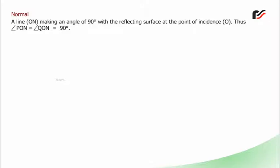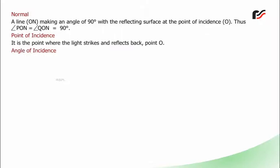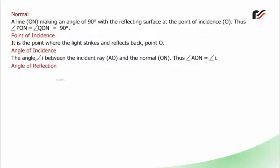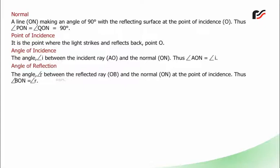Point of incidence: It is the point where the light strikes and reflects back, point O. Angle of incidence: The angle, angle I, between the incident ray AO and the normal ON. Angle of reflection: The angle, angle R, between the reflected ray OB and the normal ON at the point of incidence.